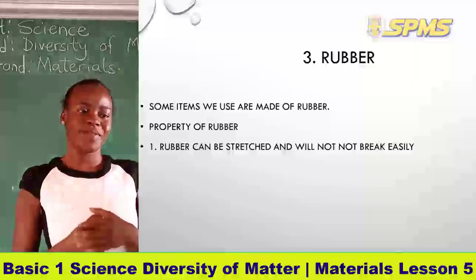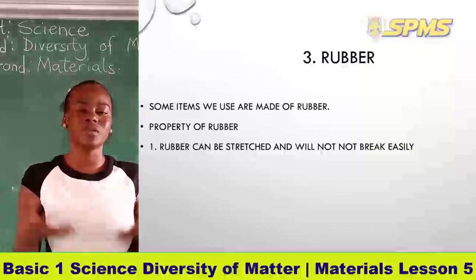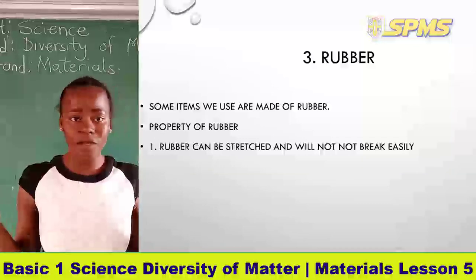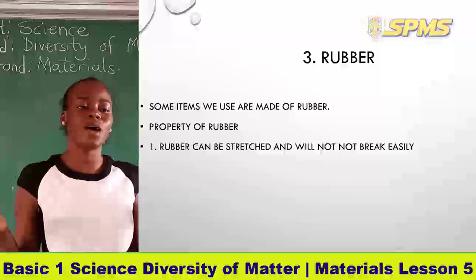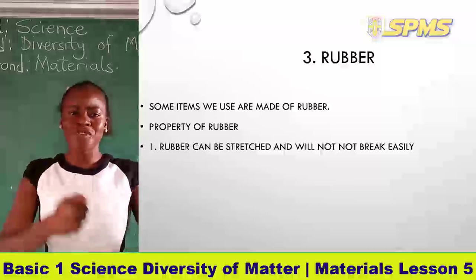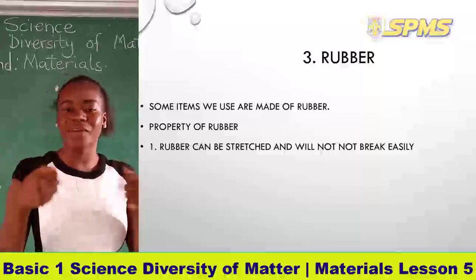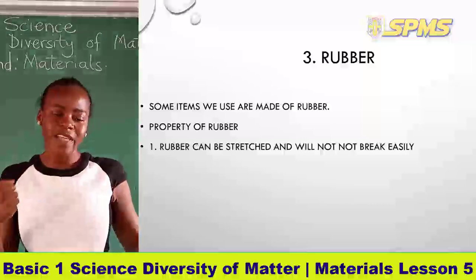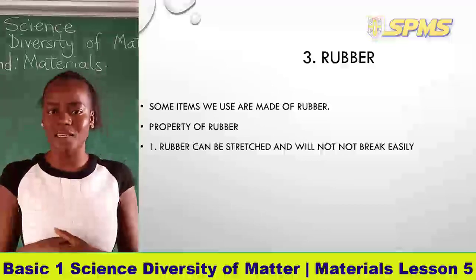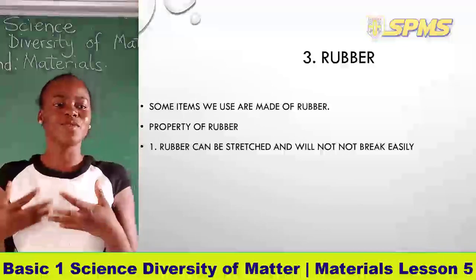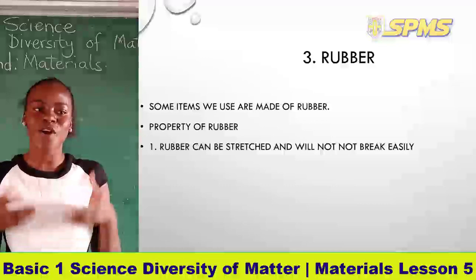Some items we use at home are made from rubber. Let's look at the properties of rubber. Rubber can be stretched — you can take a rubber band and stretch it, and it will not break easily when you stretch it. Rubber is used for car tyres — the car tyre is made of rubber.